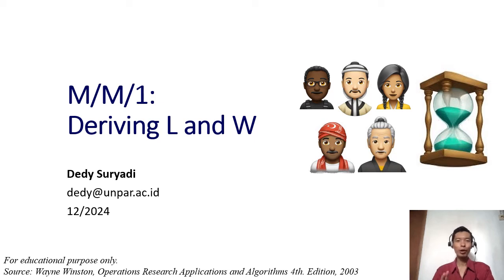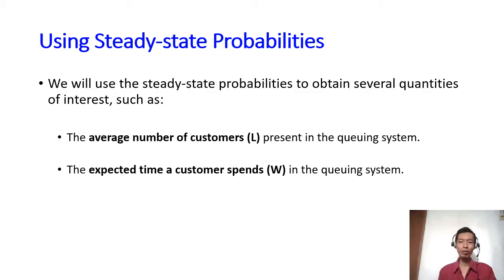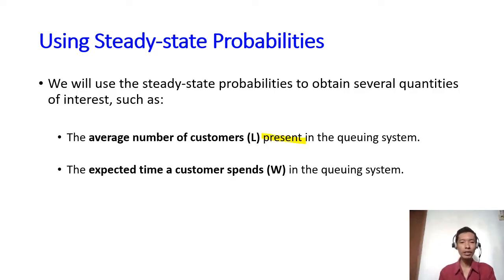We are still in the MM1 system, and we are going to derive L and W. L is related to the number of customers in the system. W is related to the time — you can think about the waiting time that people spend in our system. We are going to use the steady-state probabilities obtained in the previous video to calculate L and W. The exact definition for L is the average number of customers present in the queuing system, and for W, it is the expected time a customer spends in the queuing system.